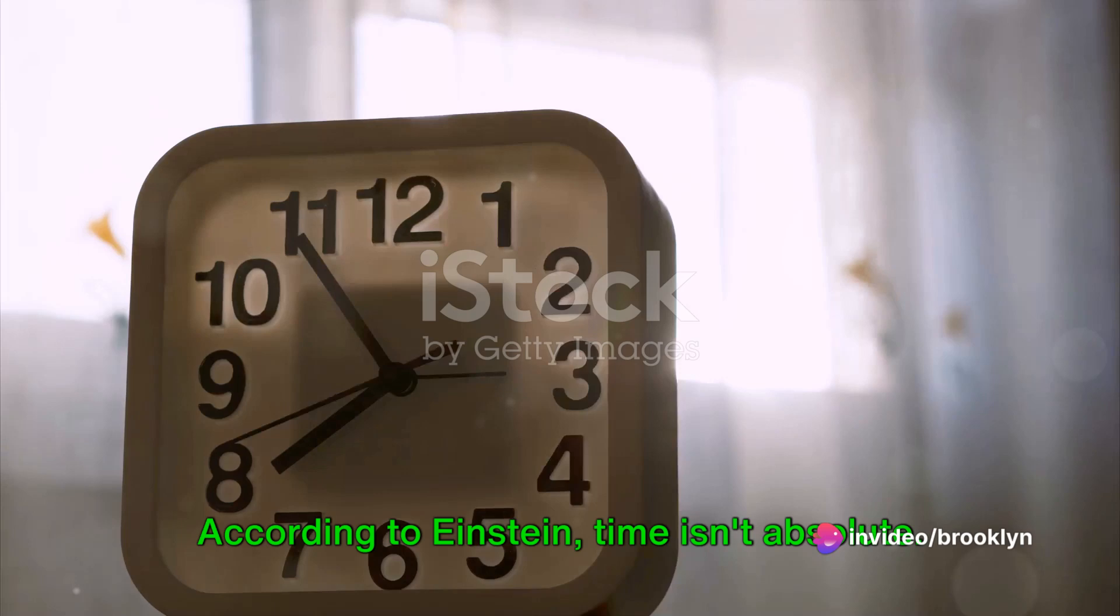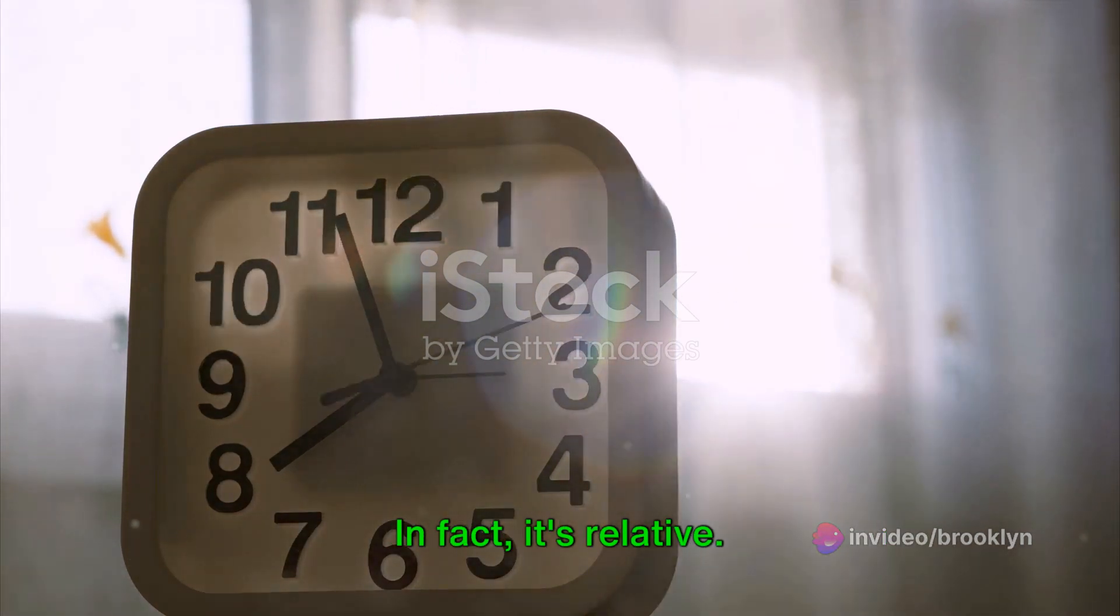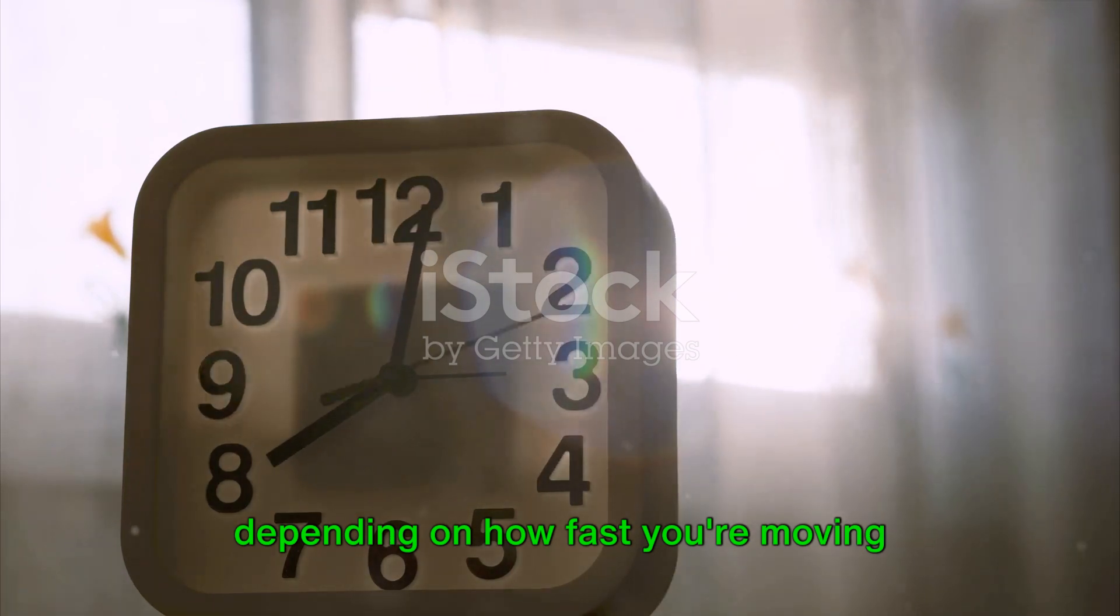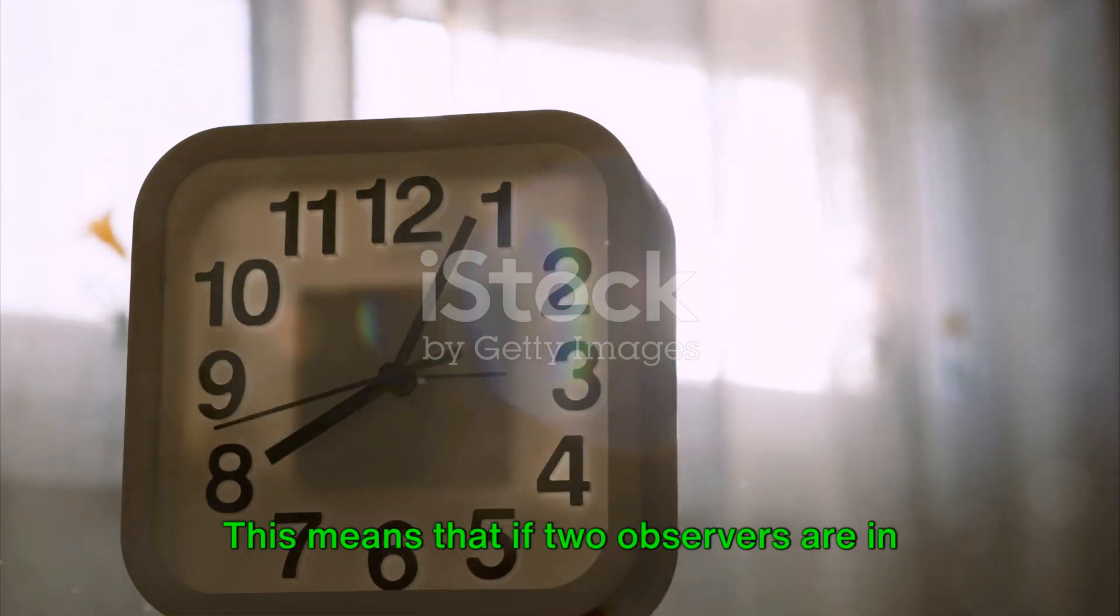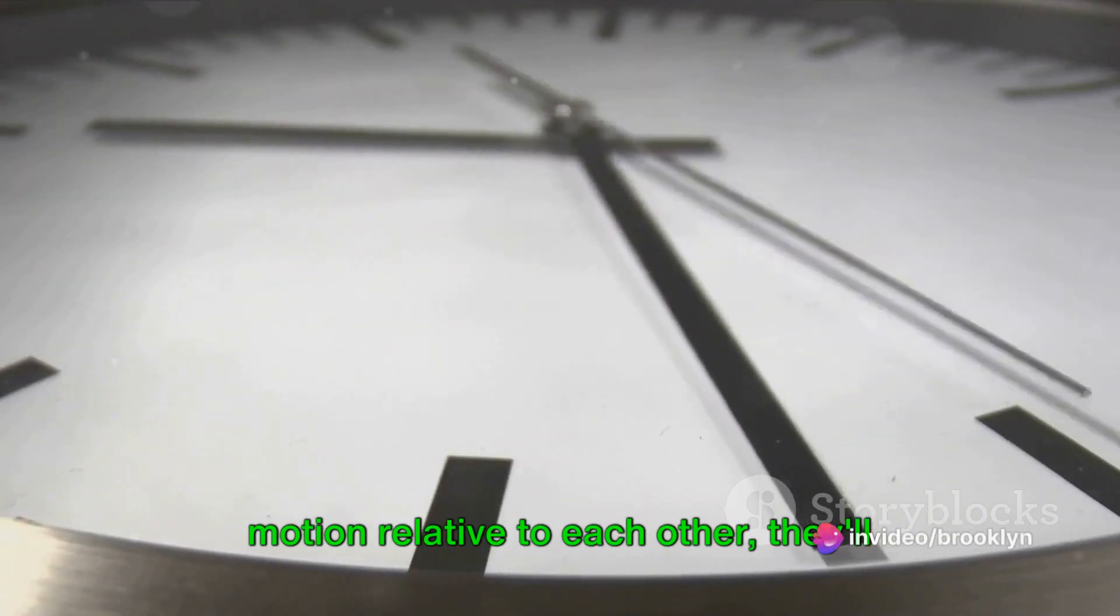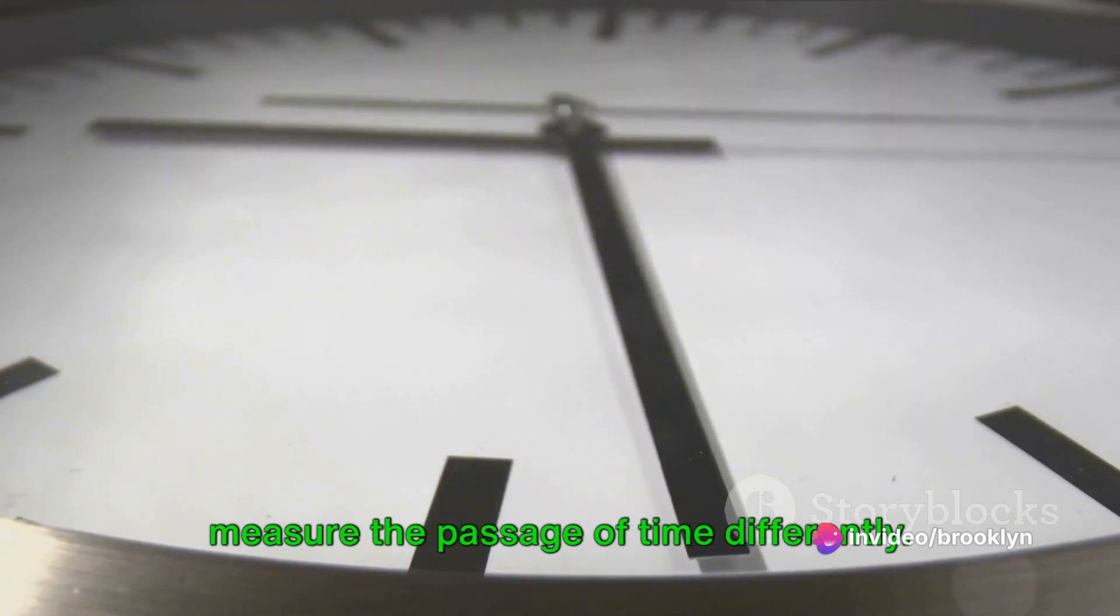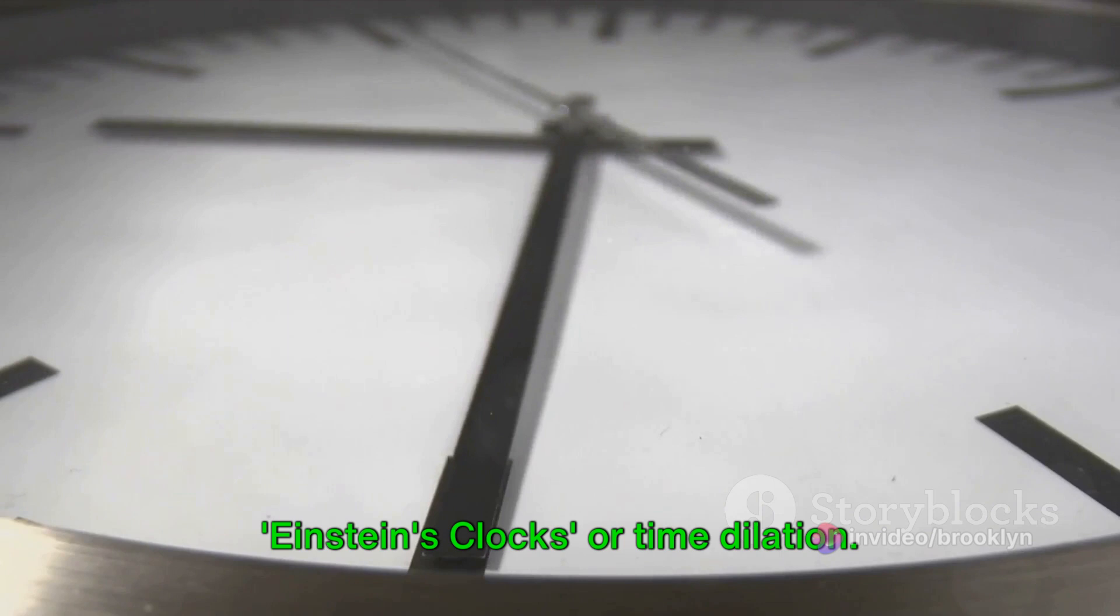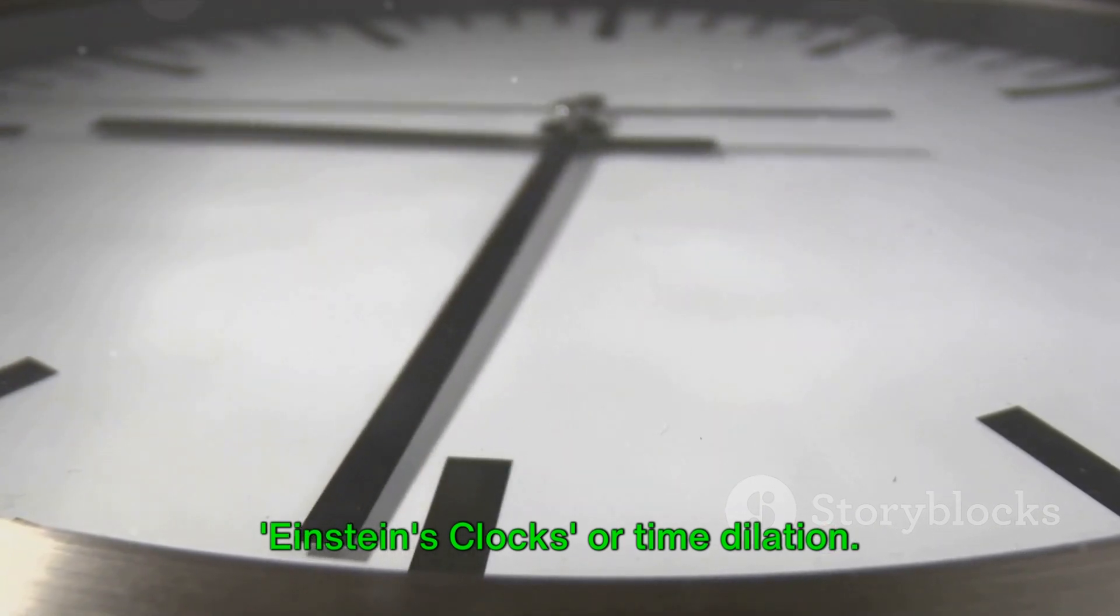According to Einstein, time isn't absolute. In fact, it's relative. The rate at which time passes can change depending on how fast you're moving compared to the speed of light. This means that if two observers are in motion relative to each other, they'll measure the passage of time differently. This is the concept we refer to as Einstein's clocks or time dilation.